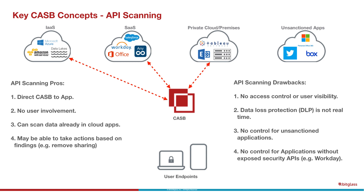Another limitation is that there's no control for unsanctioned applications. If you're not paying Box or some other application for a subscription, they're not going to let you connect to their APIs. There's also no ability to control applications that don't have exposed security APIs — Workday is the classic example, as it has a rich functional API but not a security one. Also, many sanctioned applications limit API calls or charge extra for what they consider excessive usage, so there can be additional costs to relying solely on APIs for cloud security.